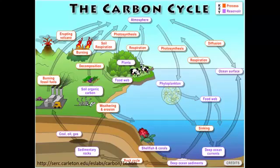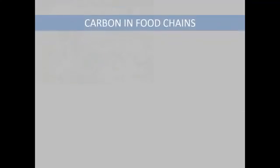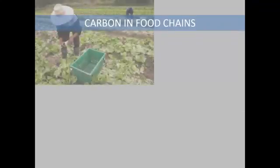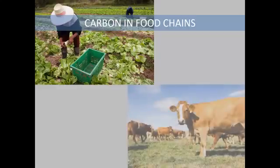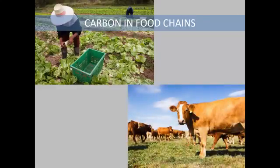Another important elemental cycle is the carbon cycle. It helps regulate our global climate, so it has a big influence on climate change. Carbon is found in all living and nonliving organisms. Plants use carbon dioxide gas from the atmosphere to conduct photosynthesis and make their own food. This food becomes part of the plant. Animals eat these plants, and the carbon becomes part of their bodies.